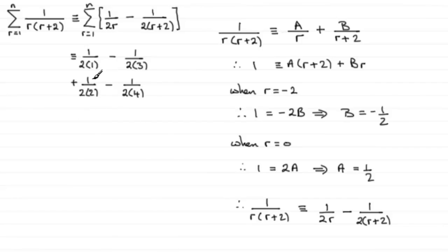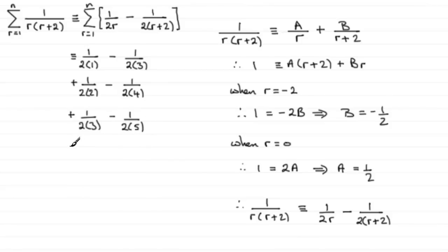The numbers are going 1, 2 and then 3, 4. Adding another line: when r=3, we get 1 over 2(3) minus 1 over 2(5). And you can see the next line would be plus 1 over 2(4) minus 1 over 2(6), and so on — the numbers go 3, 4, 5, 6 and so on.